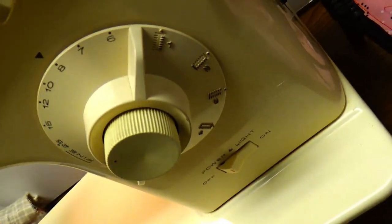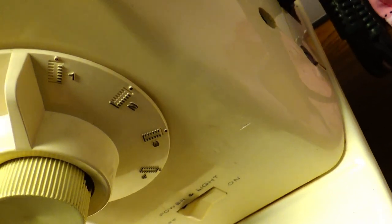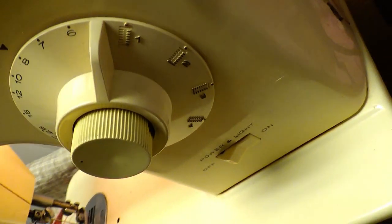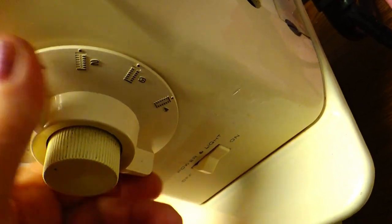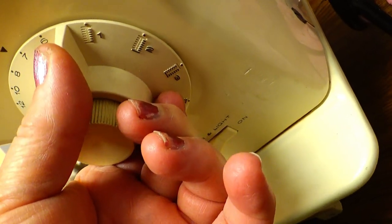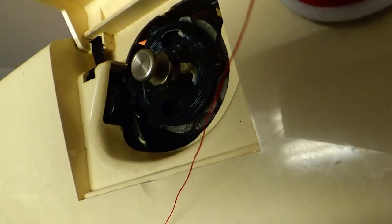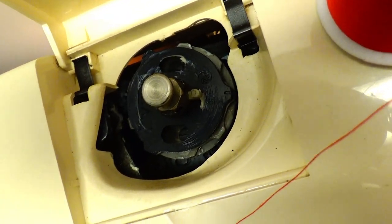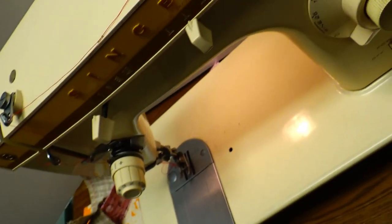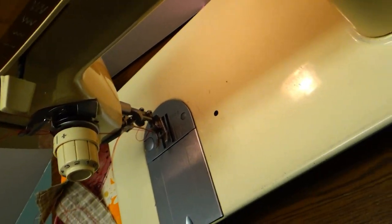Now over here we have the buttonhole dial. See, you turn it to the buttonhole stitches, see there, to each position to make your buttonholes. And the reverse up here, if you get additional cams for it, you can make some other fancy stitches if you want to. But you have the basic stitches to do about anything you want.